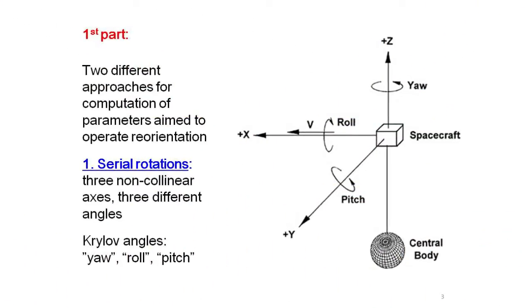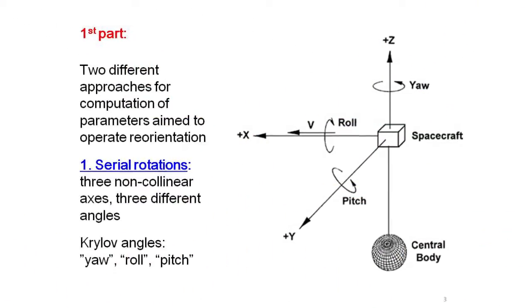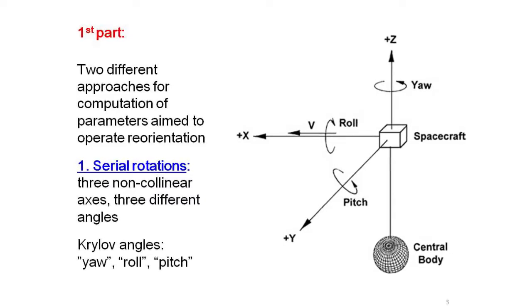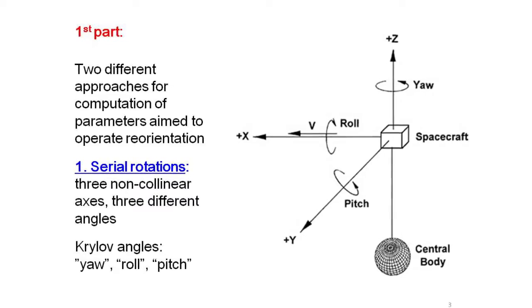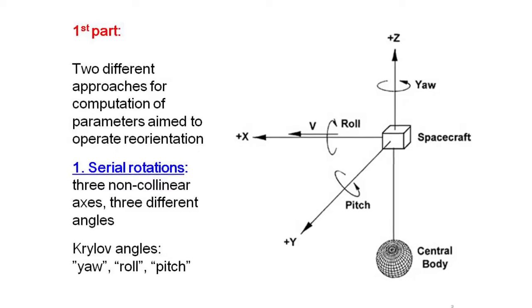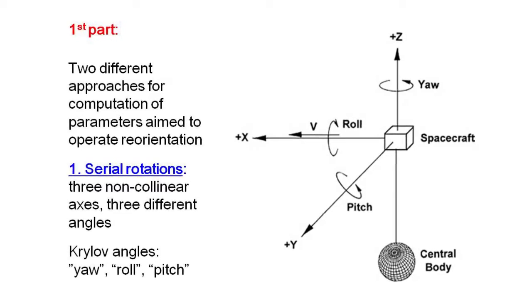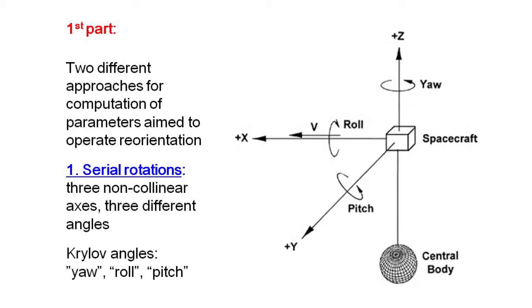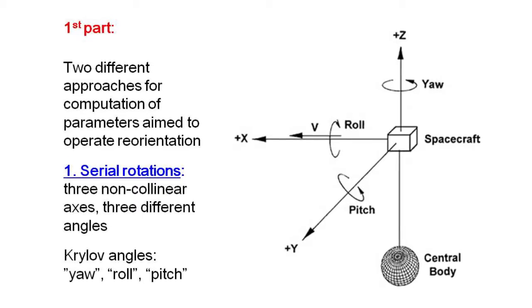One approach implies three serial space rotations about non-collinear axes by three different angles. These, for instance, can be the Euler angles or the so-called Krylov angles associated with yaw, roll, and pitch.